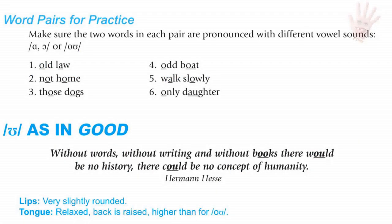Word combinations for Ah, Aw, and O: old law, not home, those dogs, odd boat, walk slowly, only daughter.